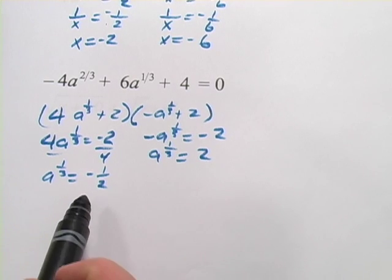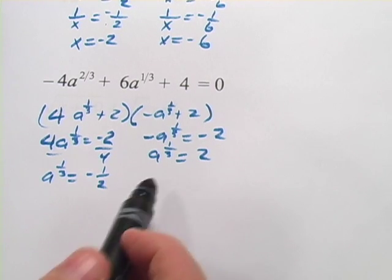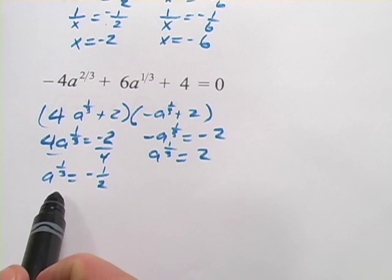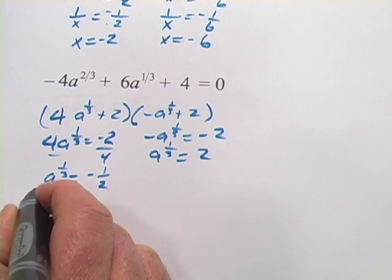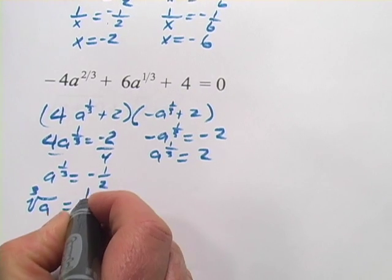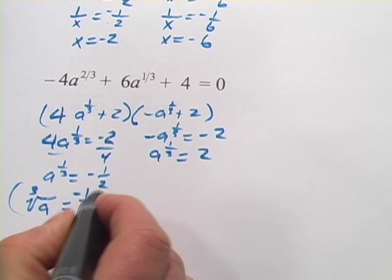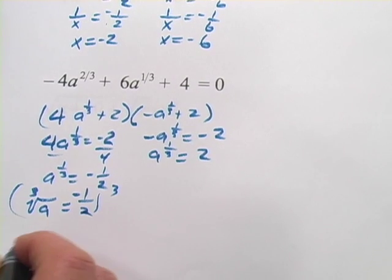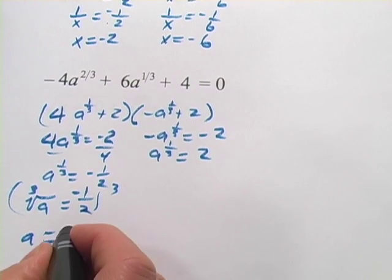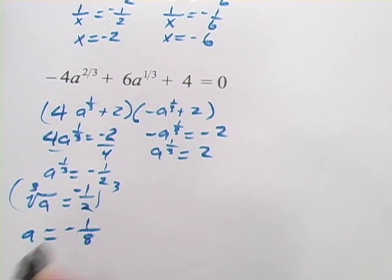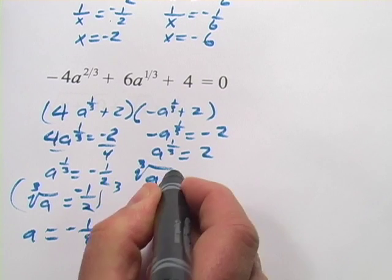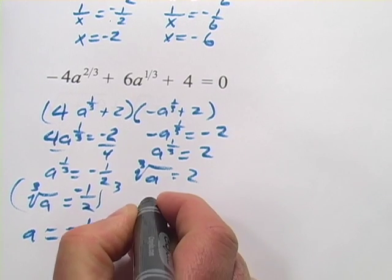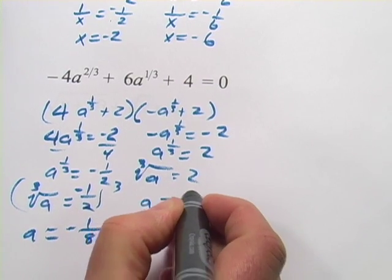Now when we get to this point, a to the 1 third equals negative 1 half or 2, what do we do next? Well, a to the 1 third is the same as the cube root of a. And I can solve this by simply cubing both sides. And what I get over here is a, and what I get over here is negative 1 eighth. Same thing over here. This is cube root of a equals 2. And when I solve that, I get a equals 8.